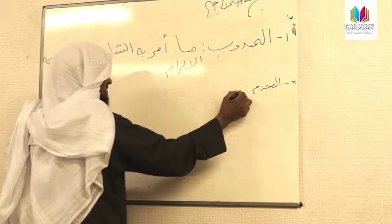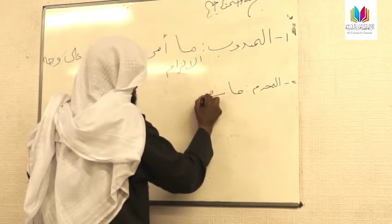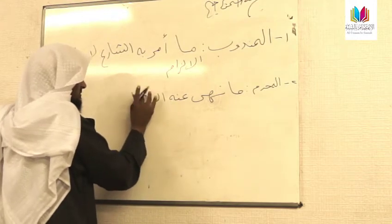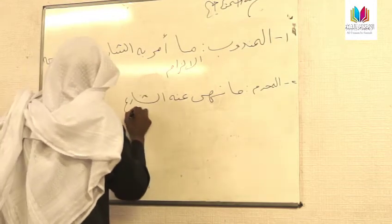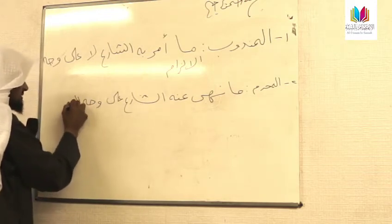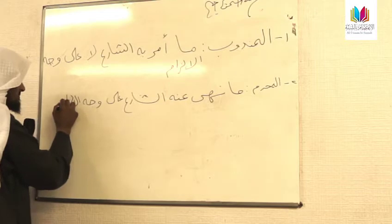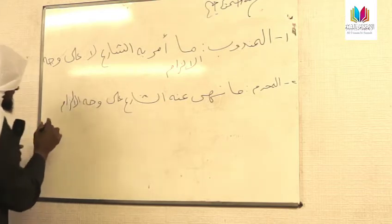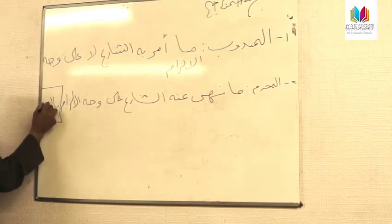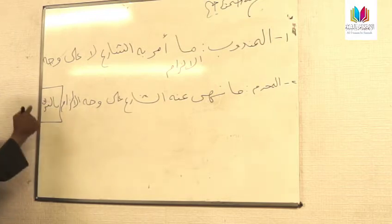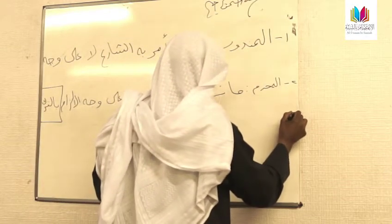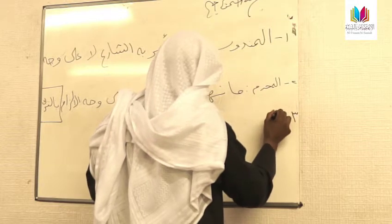The definition of Al-Muharram is: Ma naha anhu al-shari'u ala wajhi al-ilzam — that which the Shari' prohibits in a binding way.